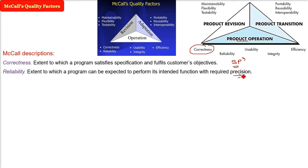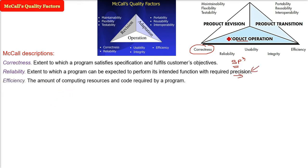We will talk about reliability and availability later with a proper mathematical definition. But for now, reliability means we can rely on it — proper function. Efficiency refers to how efficient the program is going to use the computing device's system resources.